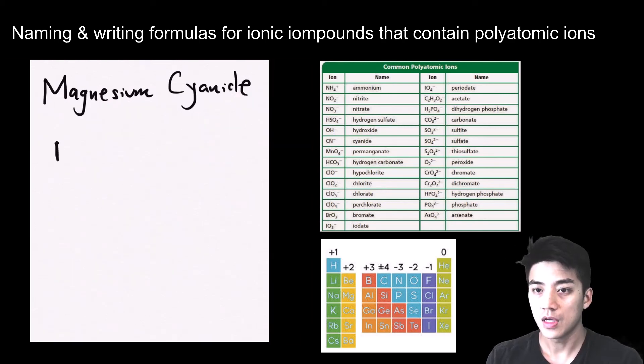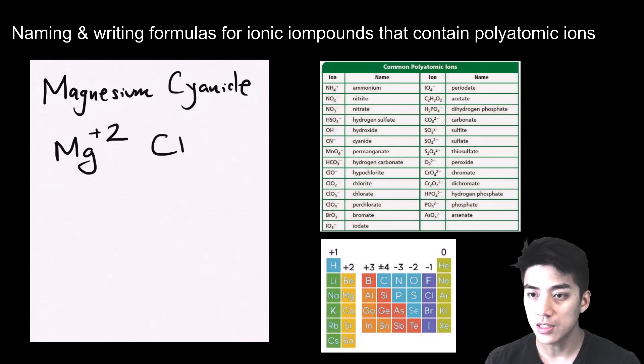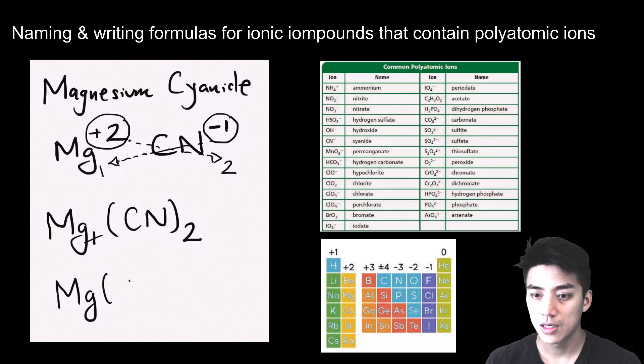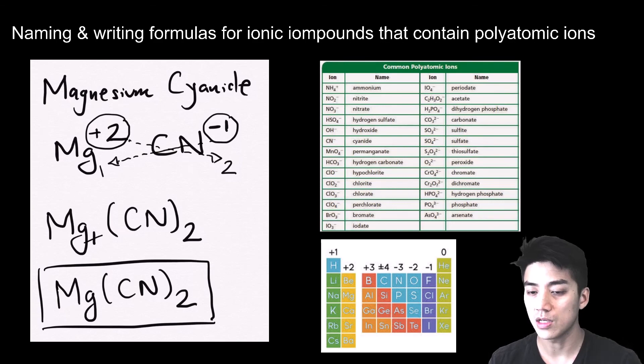Let's get magnesium cyanide out of the way. Mg is plus 2, cyanide is a polyatomic with a negative 1 charge. Circle the charges, crisscross them, bring them down. This gives us Mg1(CN)2, so 2 sets of cyanide. Omit the 1, and call it Mg(CN)2 for magnesium cyanide. That's 2 sets of cyanide, so it's actually 2 carbons and 2 nitrogens, but leave it just like that.